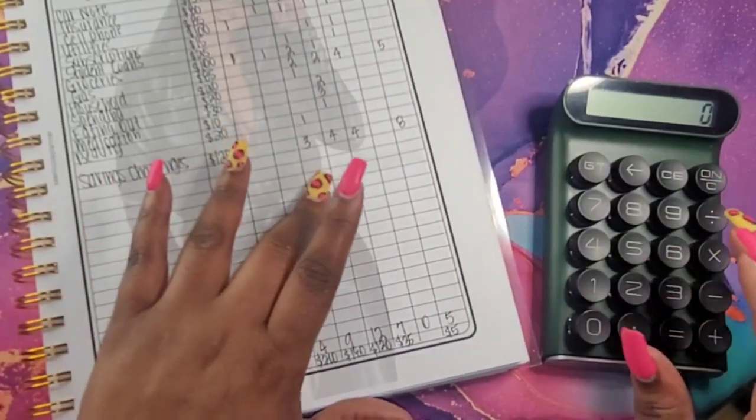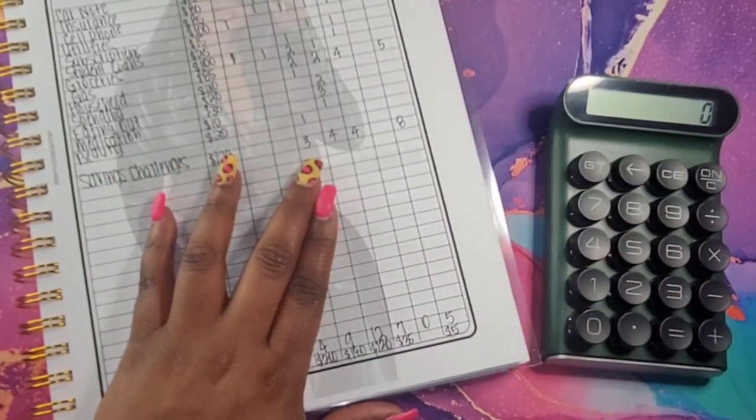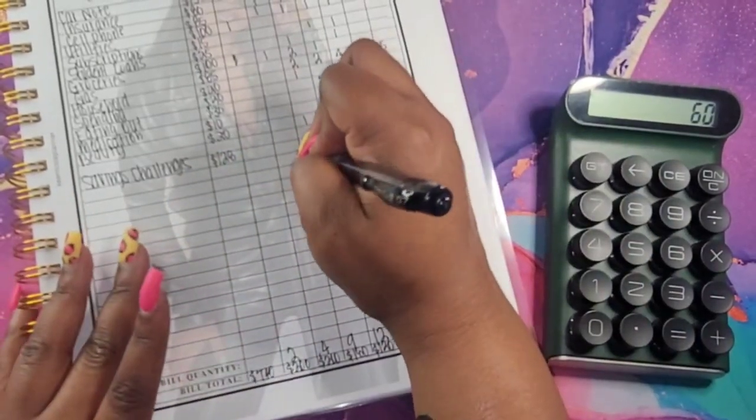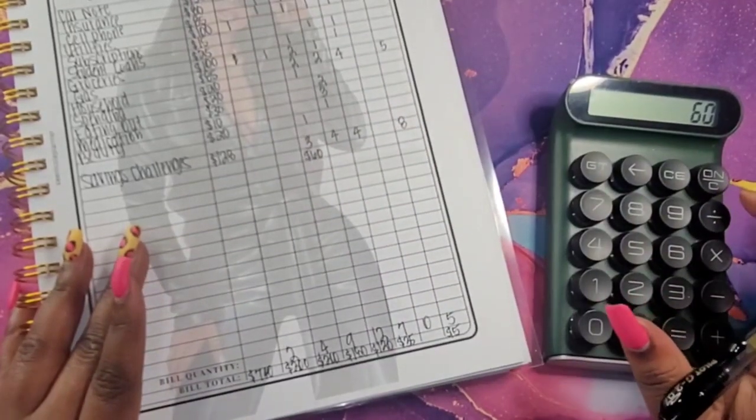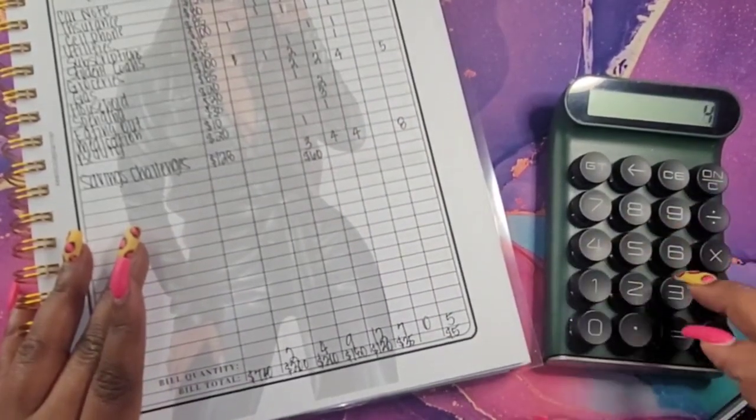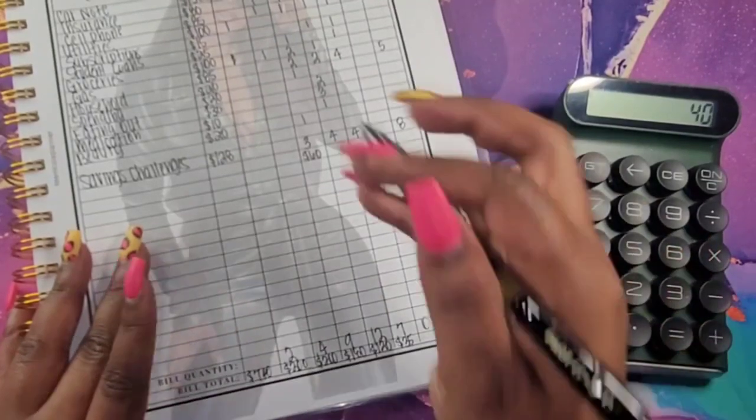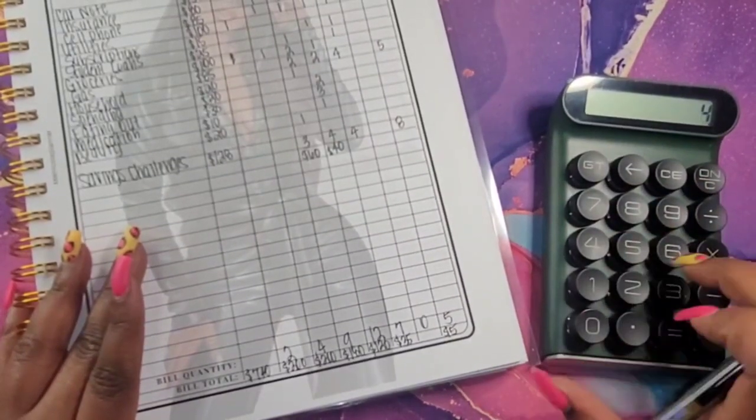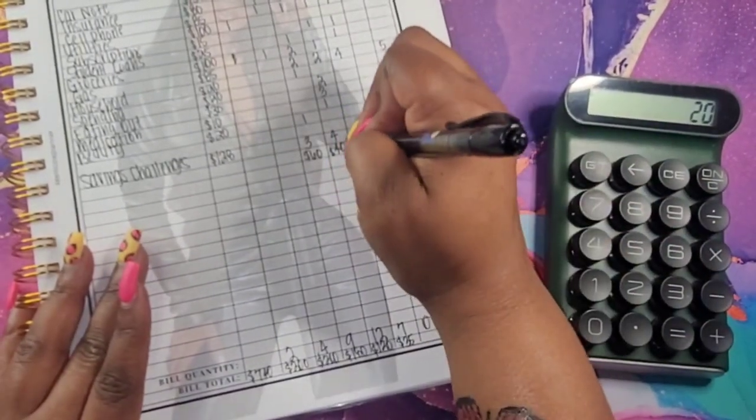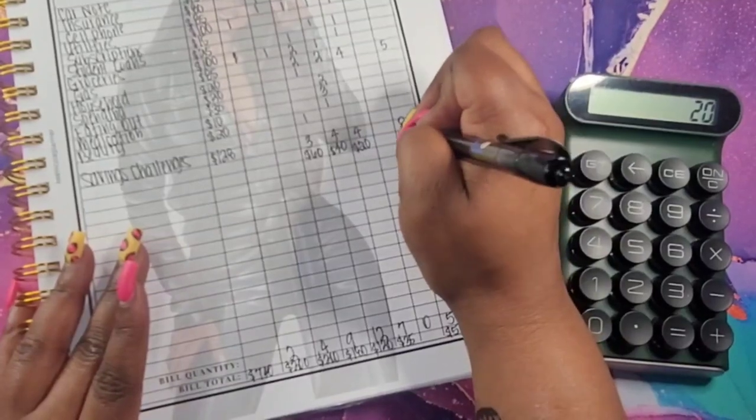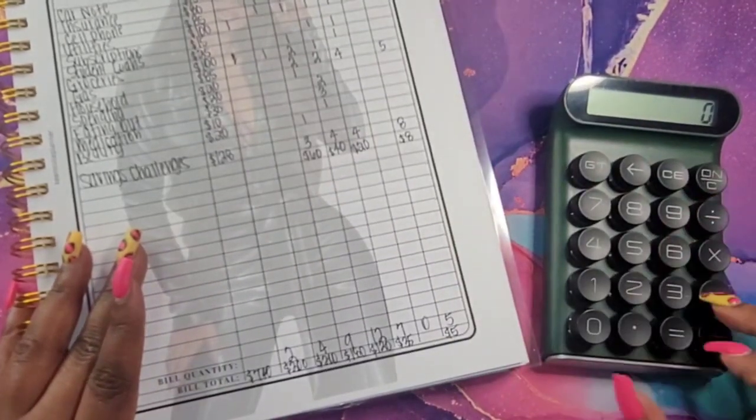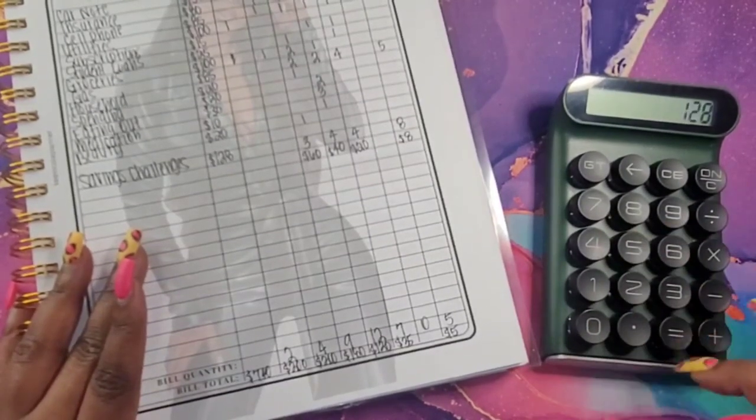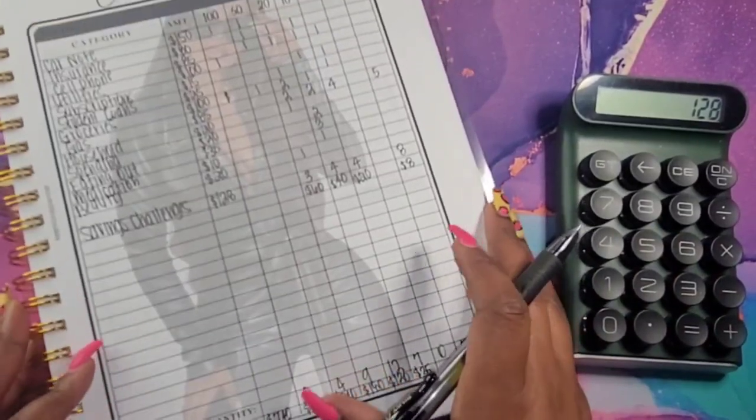Now, I will go back and make sure I have the correct amount here, which is 3 times 20, and that gives me 60. 4 times 10, and that is 40. 4 times 5 is 20, and 1 times 8 is $8. So let's add that up. 60 plus 40 plus 20 plus 8 leads me with the $128 for my savings challenges.